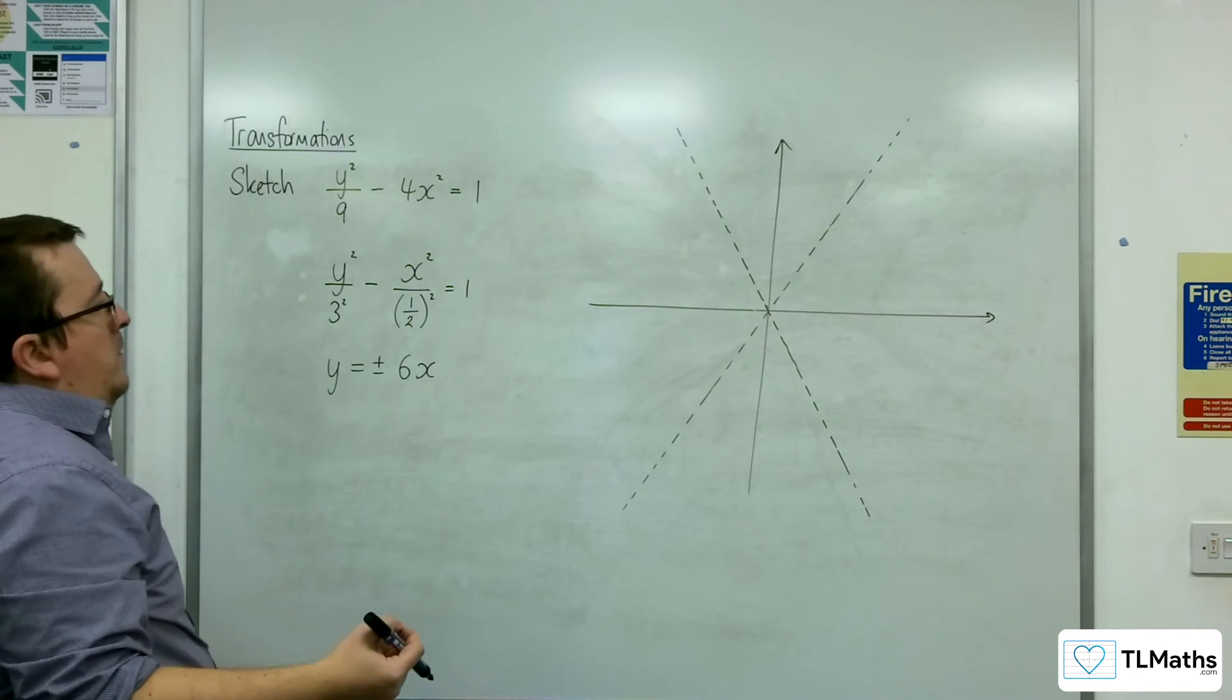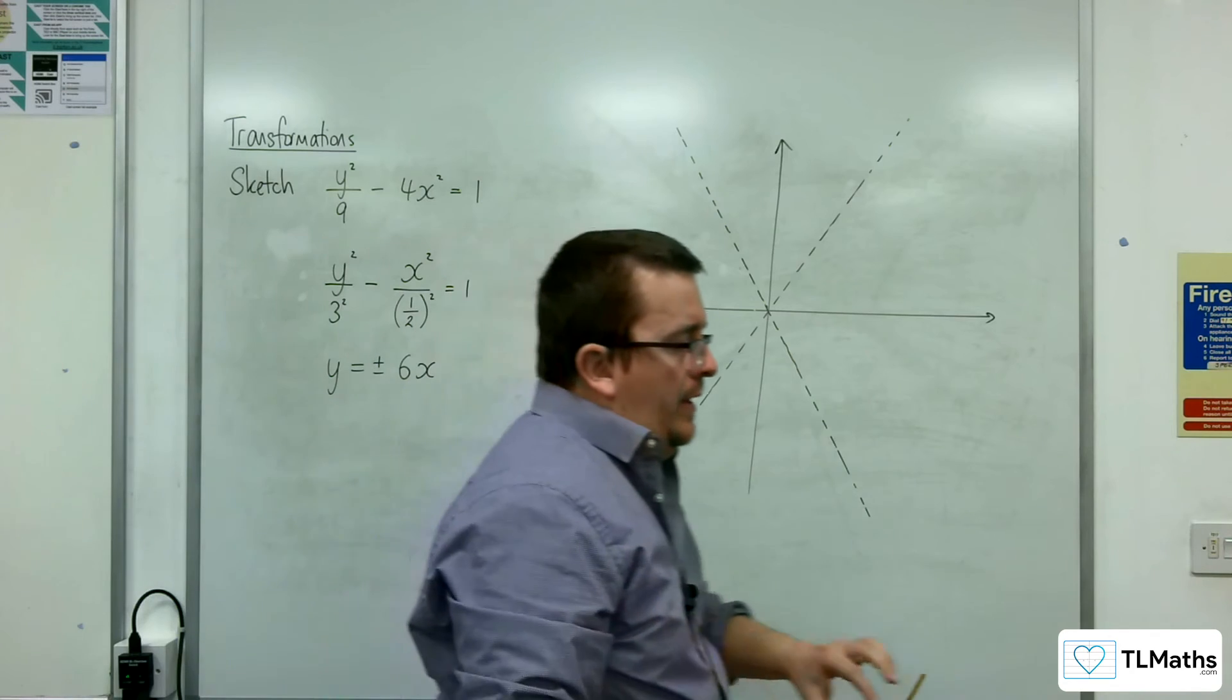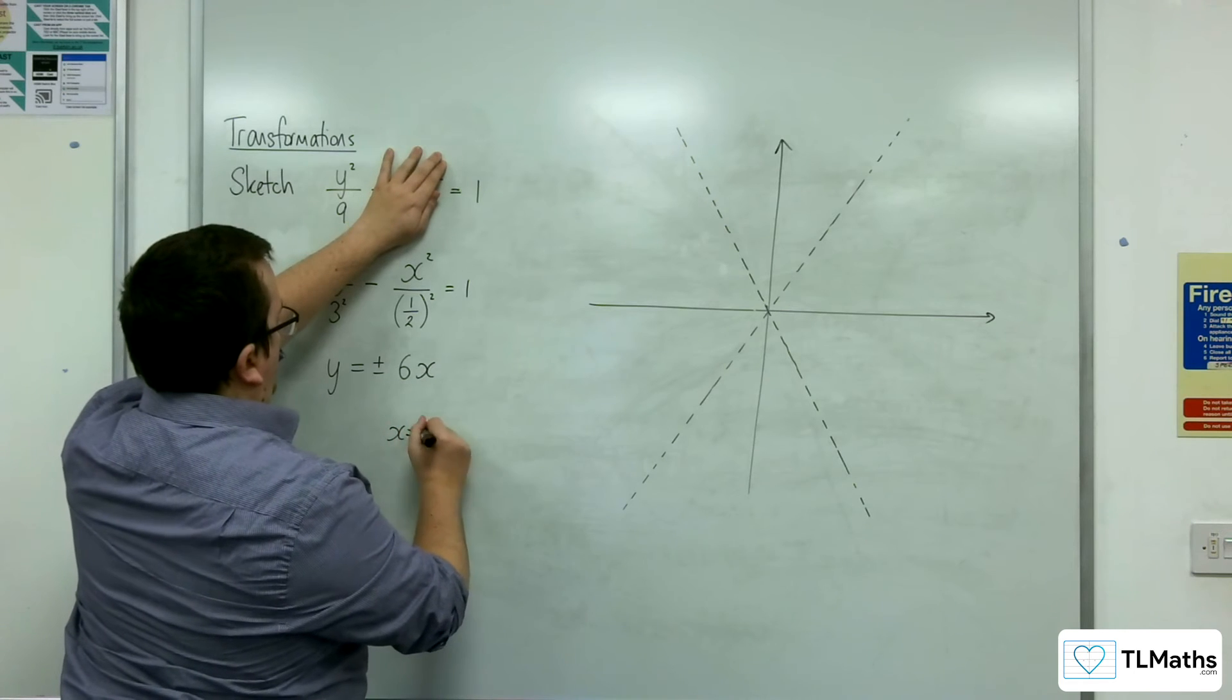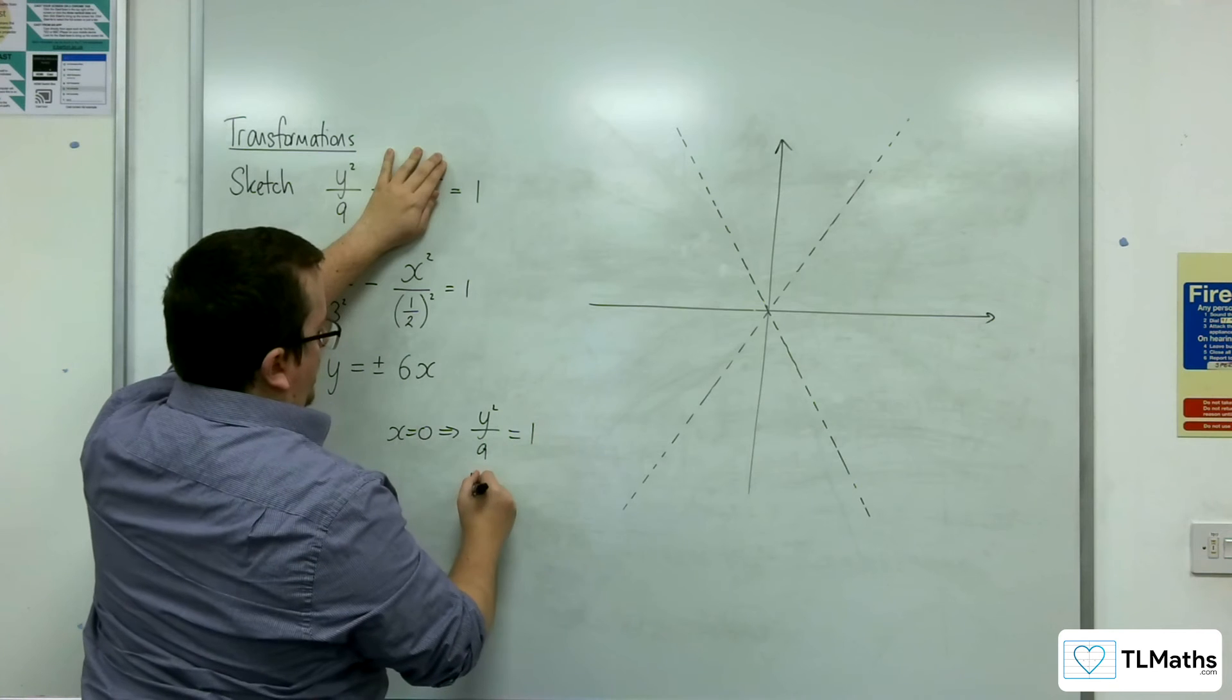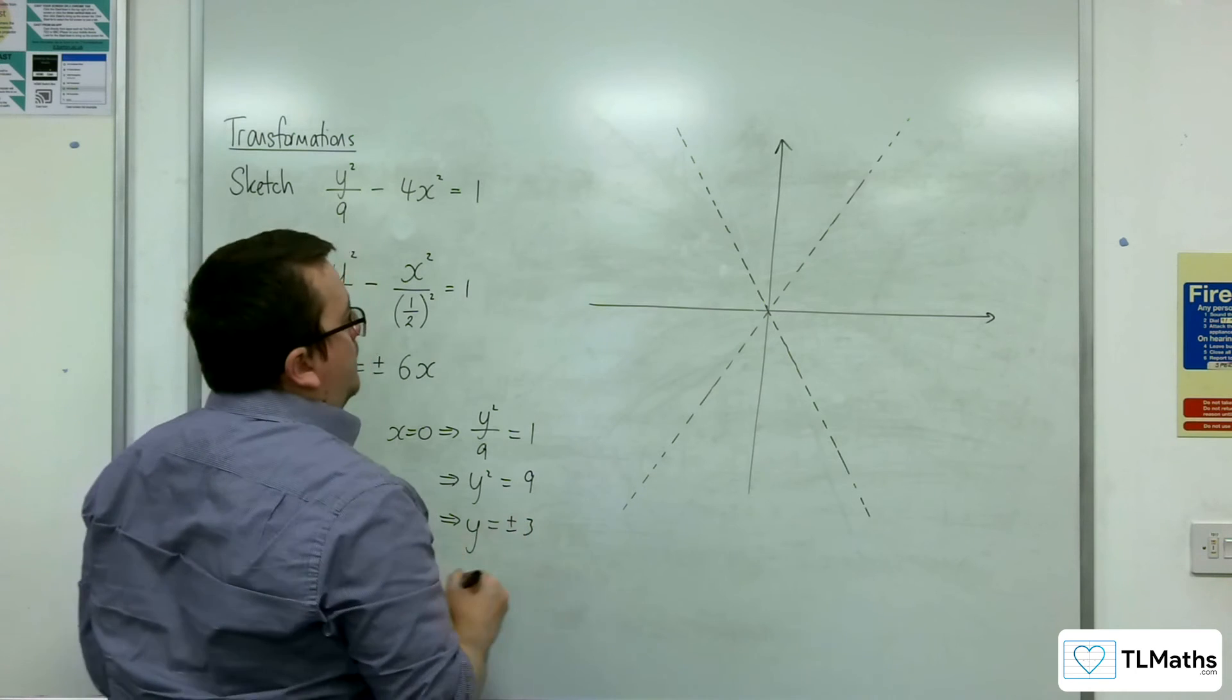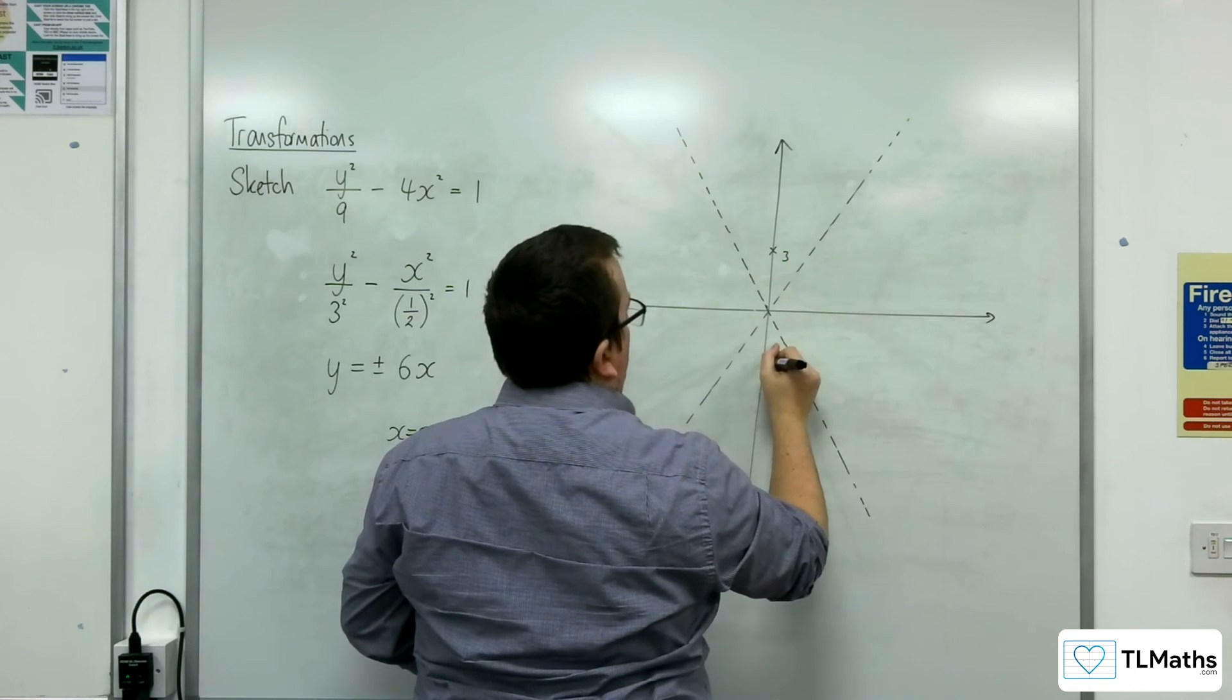So then, if I work out where x is 0. So when x is 0, I've got y squared over 9 is equal to 1. So y squared is equal to 9. So y is going to be plus or minus 3. So we're crossing through the y-axis at 3 and minus 3.